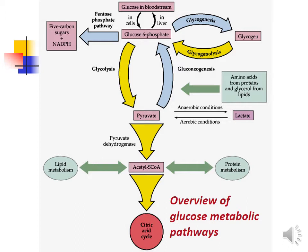Glucose-6-phosphate is converted to glycogen by glycogenesis, and glycogen is converted back to glucose-6-phosphate by glycogenolysis. Conversion of glucose-6-phosphate to 5-carbon sugars and NADPH is known as the pentose phosphate pathway. Glucose-6-phosphate is further converted by a series of reactions in a linear pathway to pyruvate via glycolysis.